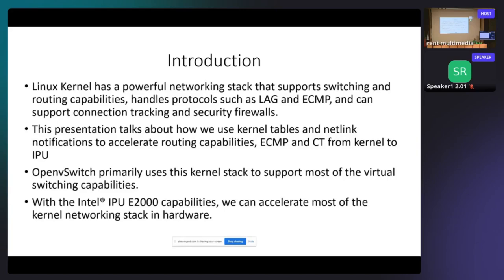This is driven by the Linux kernel tables. We listen to netlink notifications and accelerate these tables into the IPU hardware using P4. The CT functionality is completely offloaded into the kernel. I'll go over how we use the PNA auto-add capability to derive CT rules from the state tables, just like the kernel does. We also use OpenVSwitch, which is primarily used for virtual networking.